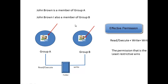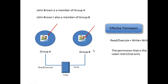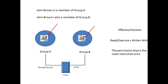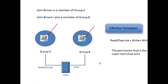John belongs to Group A and Group B, and both groups have different permissions. The rule of thumb is that if a person belongs to more than one group, you combine the permissions — they are cumulative. Group A has read and execute and Group B has write, so you add those together. The permission that wins is the least restrictive, which is write, because write can do more than read and execute.